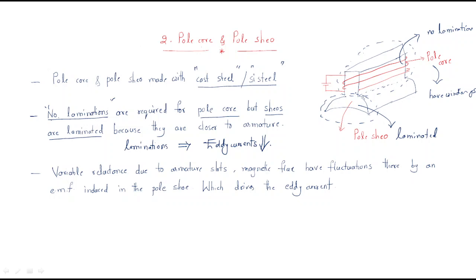The reason the pole shoe must be laminated is that the pole shoe carries more magnetic flux, which means more eddy currents are generated there. The pole core does not experience that level of flux variation.